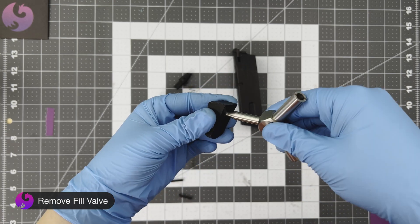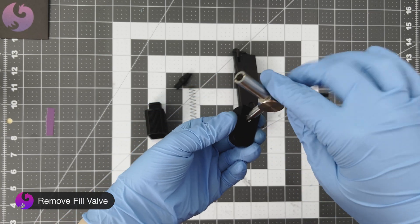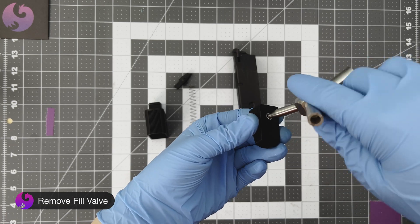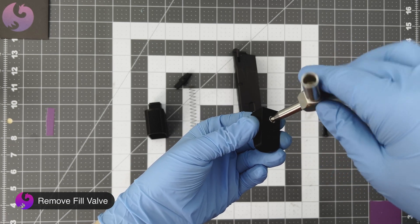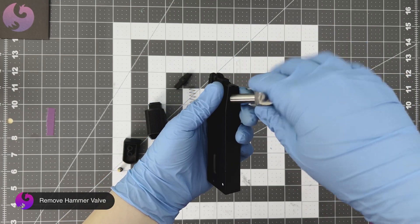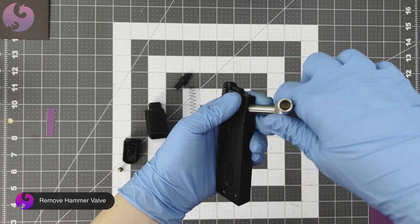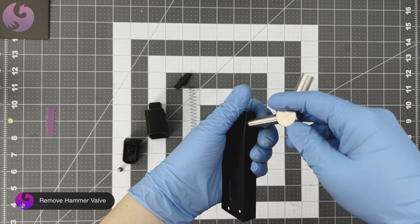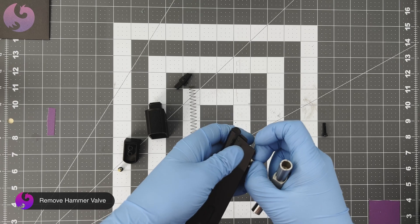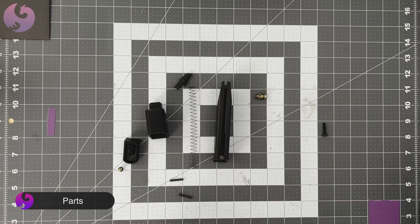Next, I'm going to take the small end of the valve tool and remove the fill valve. Then I'm going to take the medium end of the valve tool and remove the hammer valve. Now you should have all the parts laid out on the table.